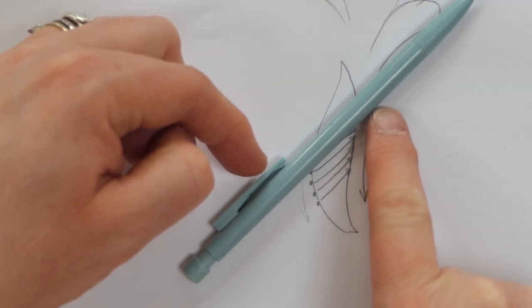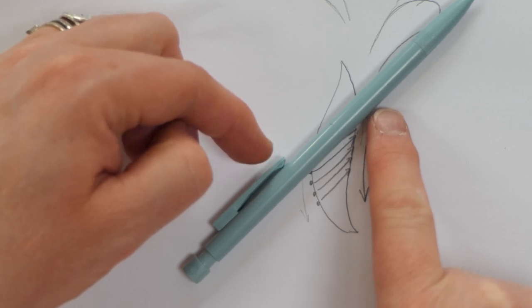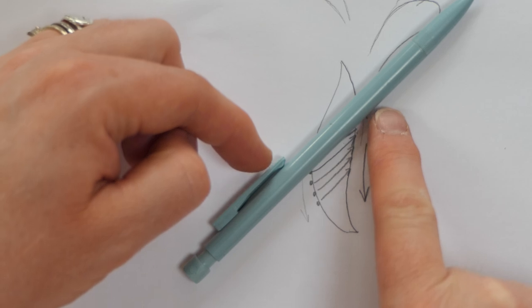You've got to remember all the time that the satin stitch is fighting against you and doesn't want to do that. It wants to flatten all the time, so we're trying to keep it acutely angled all the way through the design.